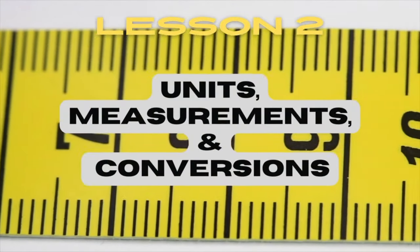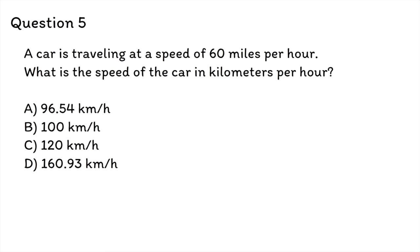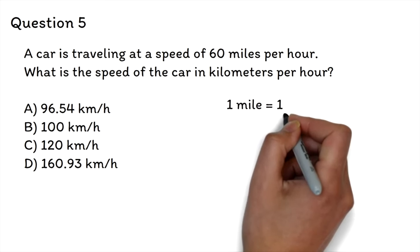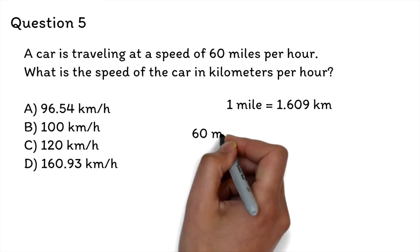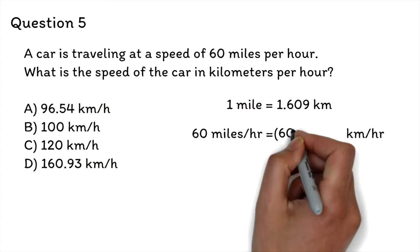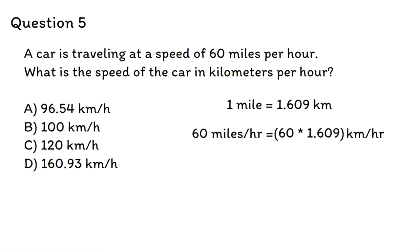Lesson 2: Units, Measurements, and Conversions. Question 5: A car is traveling at a speed of 60 miles per hour. What is the speed of the car in kilometers per hour? A. 96.54 kilometers per hour, B. 100 kilometers per hour, C. 120 kilometers per hour, D. 160.93 kilometers per hour. To convert miles per hour to kilometers per hour, we can use the conversion factor 1 mile equals 1.609 kilometers. This conversion factor will be given to you on the GED. Therefore, to convert 60 miles per hour to kilometers per hour, we multiply 60 by 1.609. This gives us a speed of approximately 96.54 kilometers per hour. So the correct answer is A.